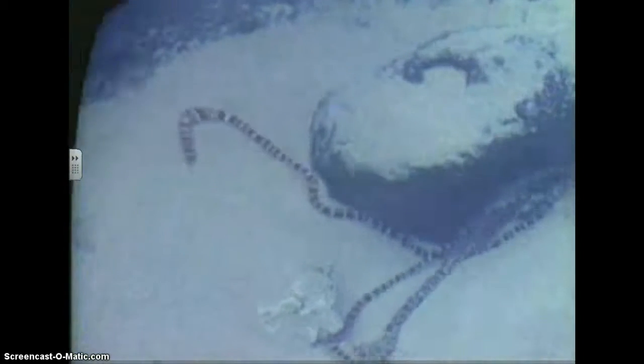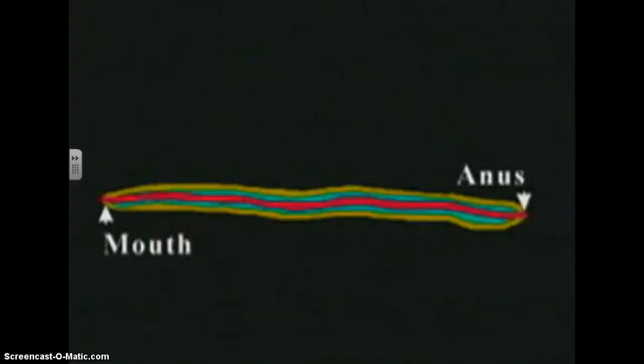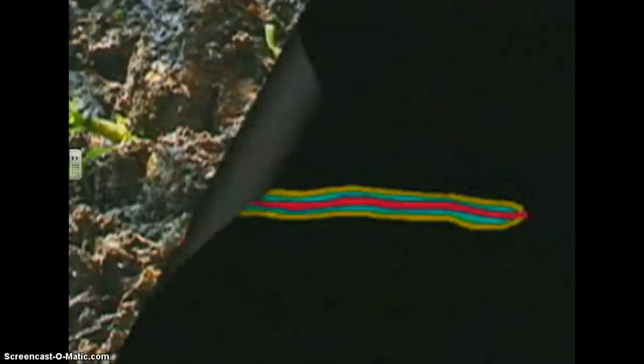All the other phyla of worms, such as the large marine worm seen here, possess a digestive tube that runs through a fluid-filled body cavity called a coelom. The digestive tube begins at the mouth and ends at a second opening, the anus, through which wastes are expelled. Although some worms use gills for obtaining oxygen, most simply absorb it through their moist skins.